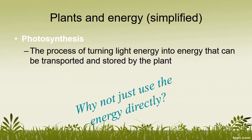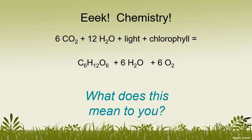Not to get too complicated, but plants use a process called photosynthesis to use sunlight from the sun to convert these basic building blocks into energy that could be transported and stored inside the plant. You don't really need to understand exactly how this happens, but you do need to understand the different components that are needed for it to happen.